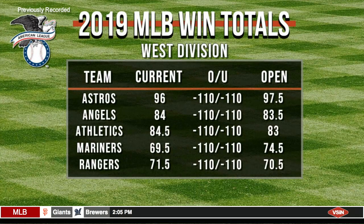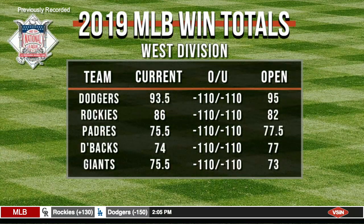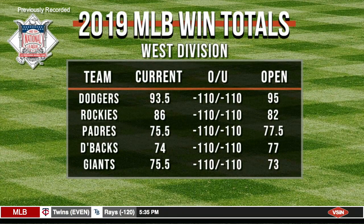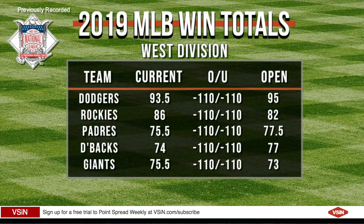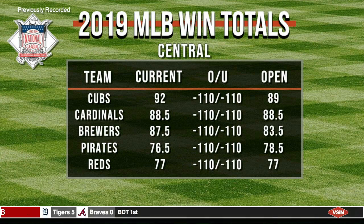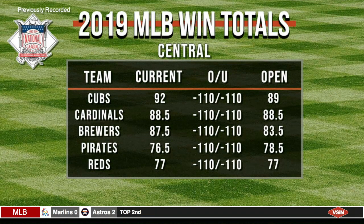National League West: Dodgers 93 and a half — another high number after going under last year. Rockies at 86, bet up from 82. Padres 75 and a half, Giants 75 and a half, D-backs at 74. National League Central is very interesting — it could be the Cardinals, Brewers, or Cubs. Cubs 92, Cardinals 88 and a half, Brewers 87 and a half, Reds at 77, Pirates 76 and a half. Who's your favorite in the Central? Cardinals without a doubt. The Cubs get Darvish back hopefully, but the Cardinals are by far the best team in this division.